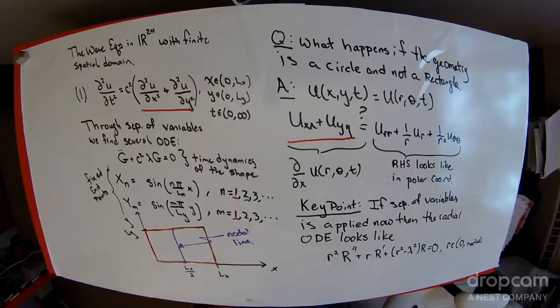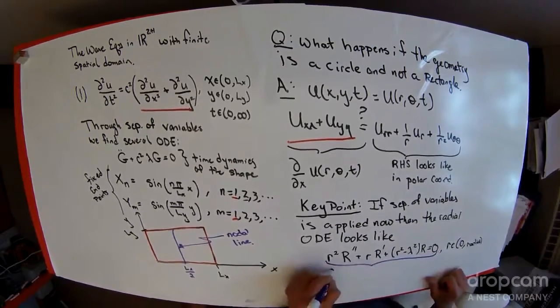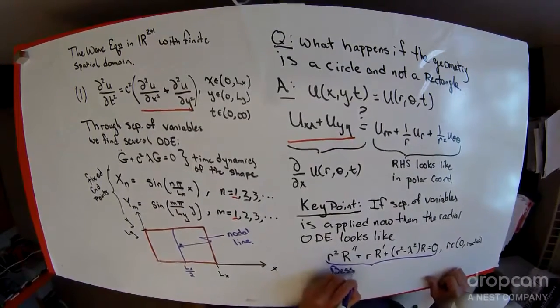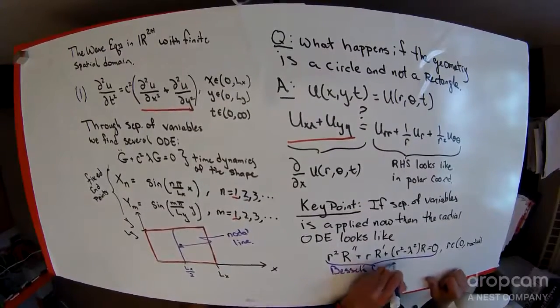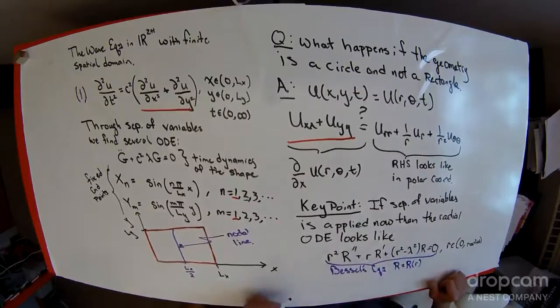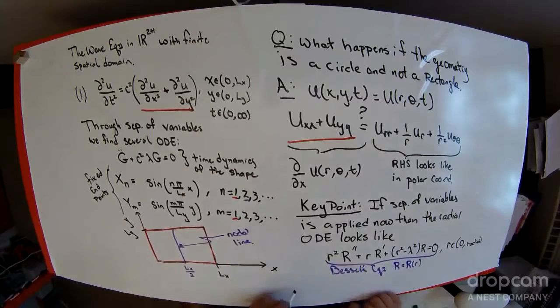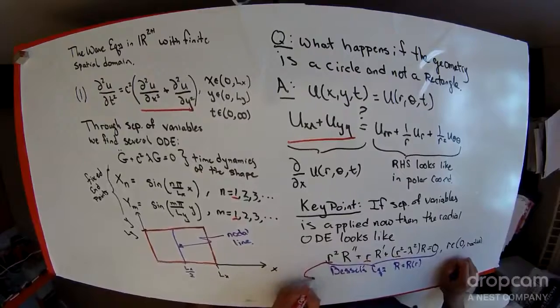This is an equation known as Bessel's equation, where capital R is a function of little r.